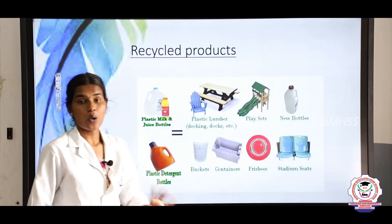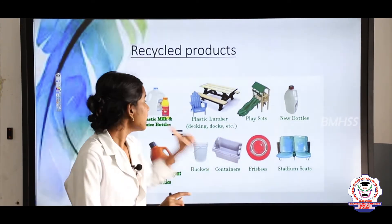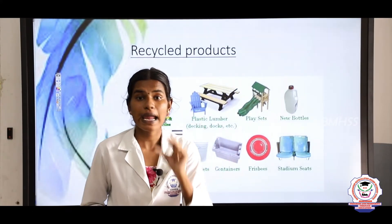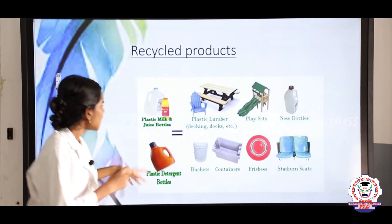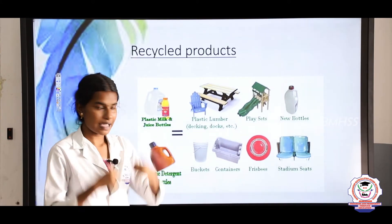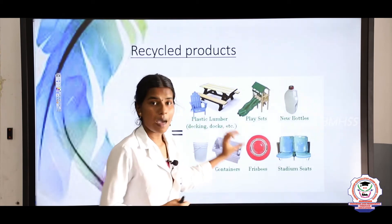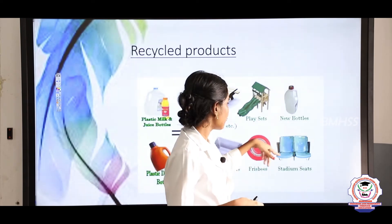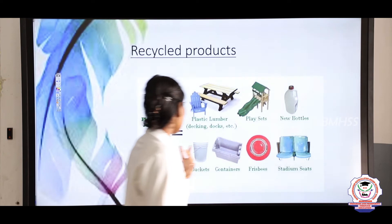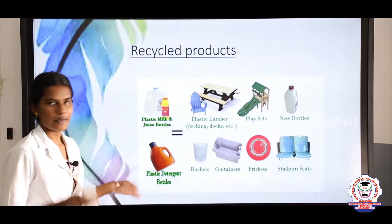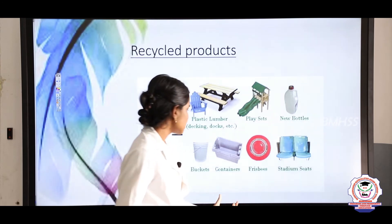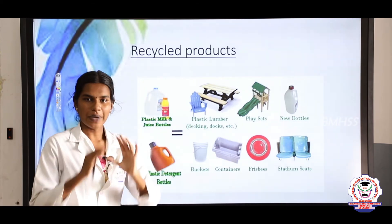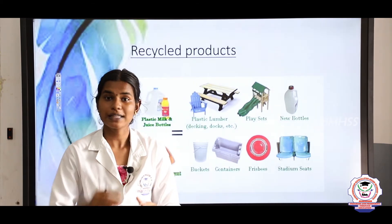After all these steps, finally they bring out the end products. They produce plastic boxes, plastic cans, and plastic lumber — which means docks, stools, chairs, etc. They also bring out new bottles, new water cans, plastic detergent bottles, buckets, containers, frisbees, and stadium seats. So they bring out all plastic products as new recycled goods.